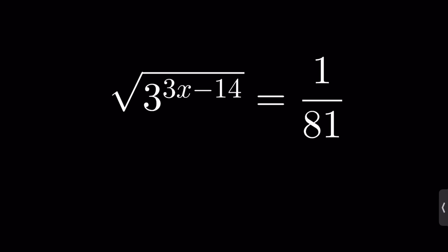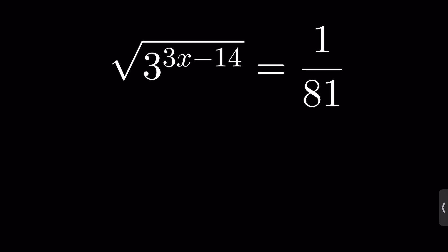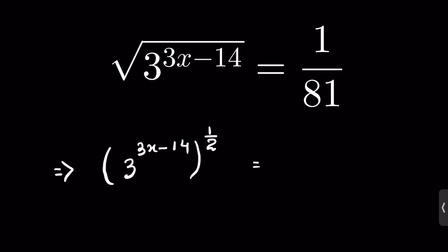3 raised to the power (3x minus 14) under square root is equal to 1 upon 81. Find the value of x. So, square root means it is raised to the power of 1 upon 2, giving us 3 raised to the power (3x minus 14) to the power of 1/2 is equal to 1 upon 81. And 81 we can write as 3 raised to the power 4.